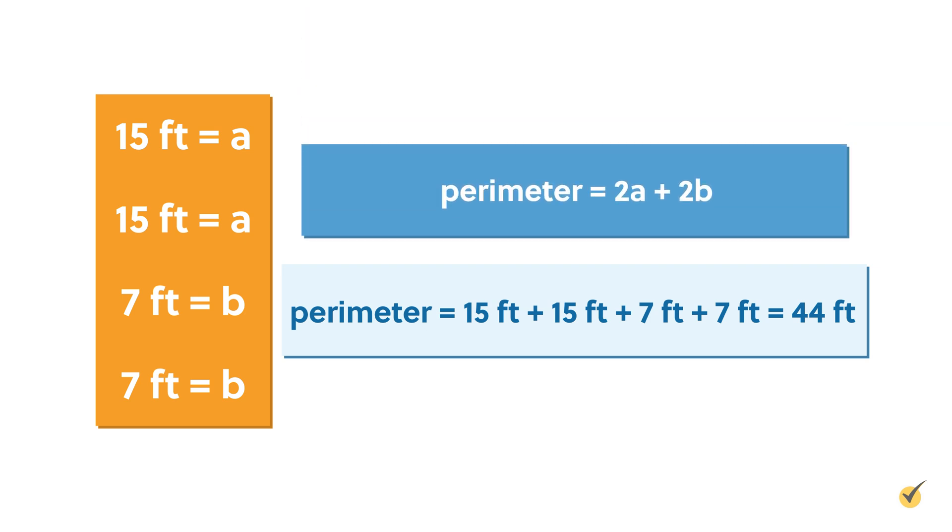Let's give it a whirl. I bet we get the same result. 2 times 15 equals 30 and 2 times 7 equals 14. Add those two together for a sum of 44 feet.